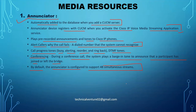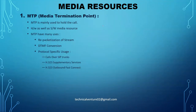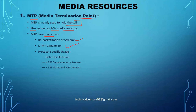The second media resource is the media termination point — MTP. MTP is mainly used to hold the call. As soon as you press the hold button and your call is on hold, the MTP holds that call. It is both a hardware and software media resource. MTP has many uses: repacketization of stream, DTMF conversion, and protocol-specific usage such as calls over SIP trunks, H.323 supplementary services, and H.323 outbound fast connect.